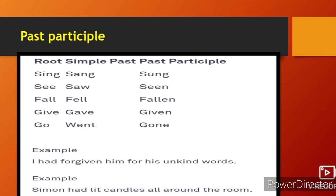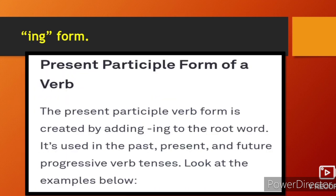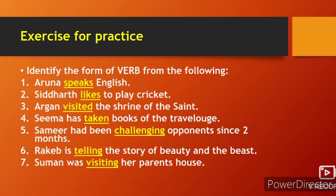Next is the ING form, also called the present participle. The present participle form of a verb is created by adding 'ing' to the root word. It's used in the past, present, and future progressive verb tenses — jise aap continuous tenses kehte ya progressive tenses kehte hain, us mein ING form of verb use hota hai.